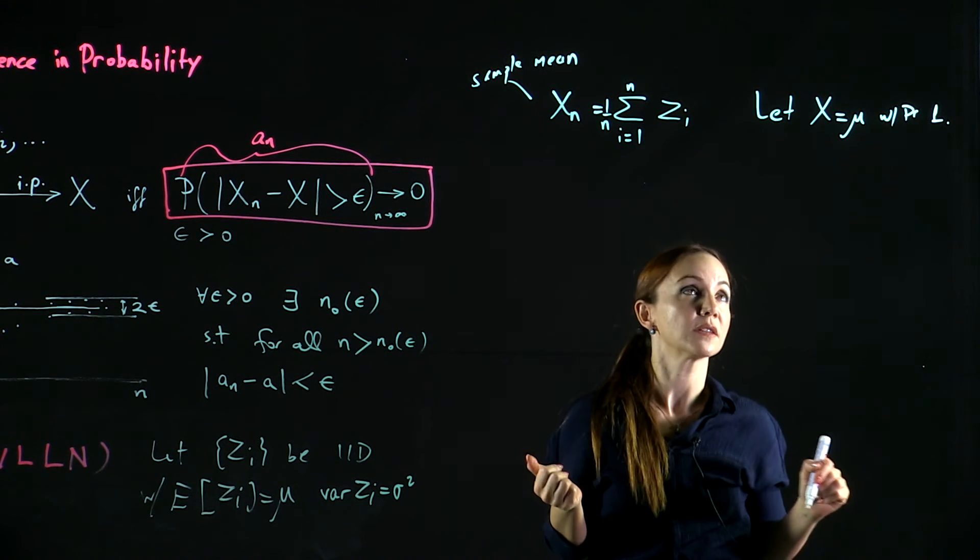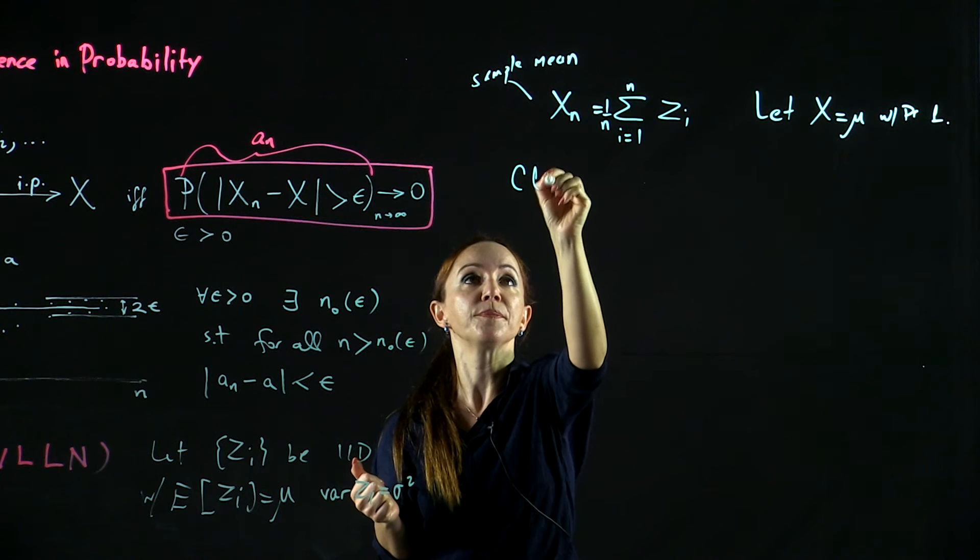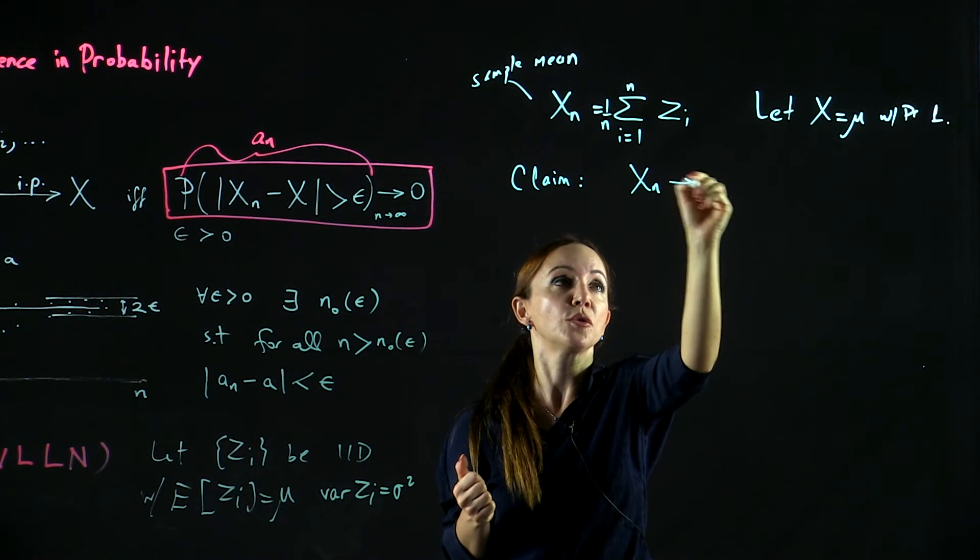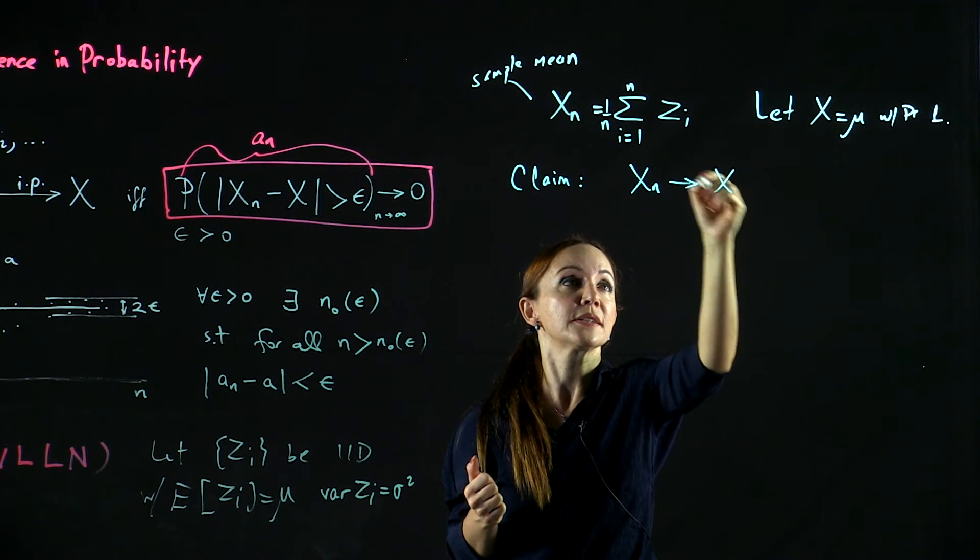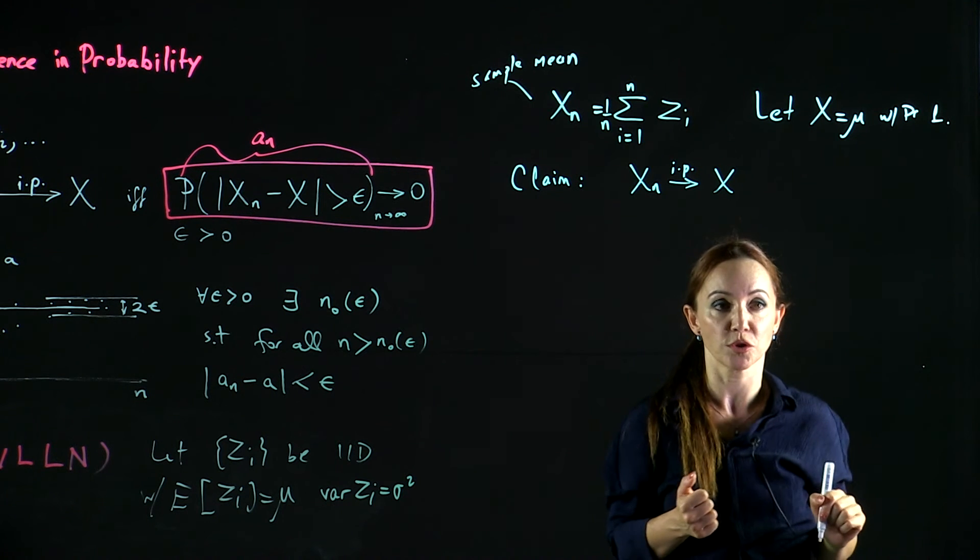So this random variable X is equal to the mean of the individual Zi's with probability 1. Essentially it's a constant. So the claim is that XN converges to X in probability as n goes to infinity.